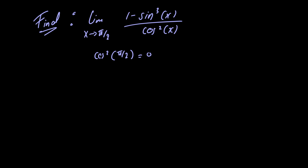So what we're going to have to try to do is rewrite the numerator and the denominator so that we can avoid that. Notice that 1 minus sine cubed of x is equal to 1 cubed minus sine cubed of x, because 1 raised to any power is just itself.